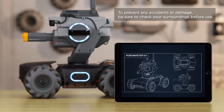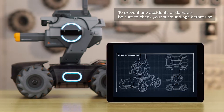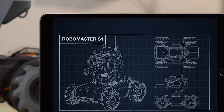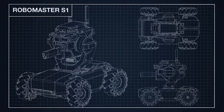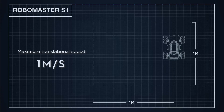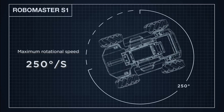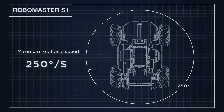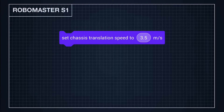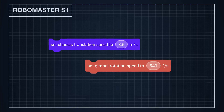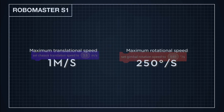To ensure safety, the S1's speed is limited while running an Autonomous Program. The S1's maximum translational speed is 1 meter per second, and the maximum rotational speed is 250 degrees per second. Users can customize speed, but if a speed value above the accepted range is set, it will return to the default number.